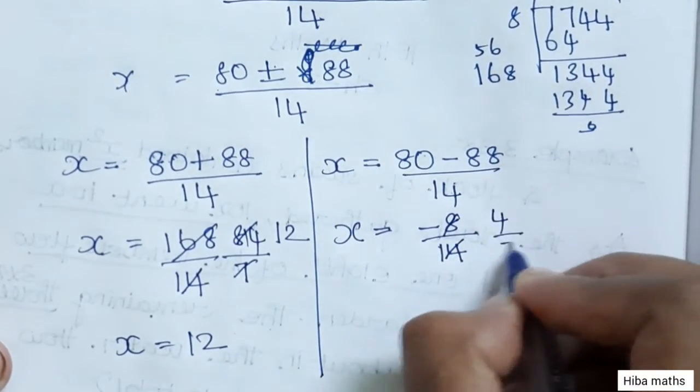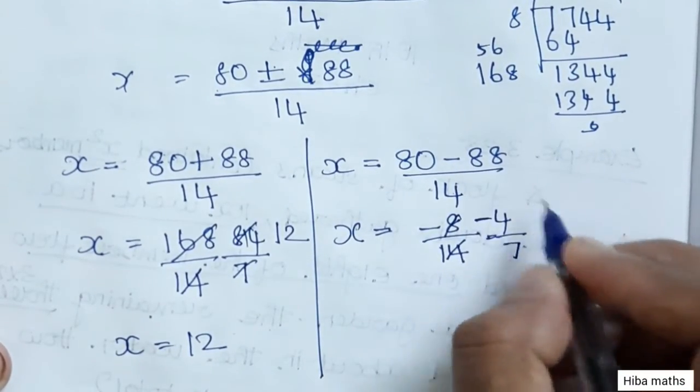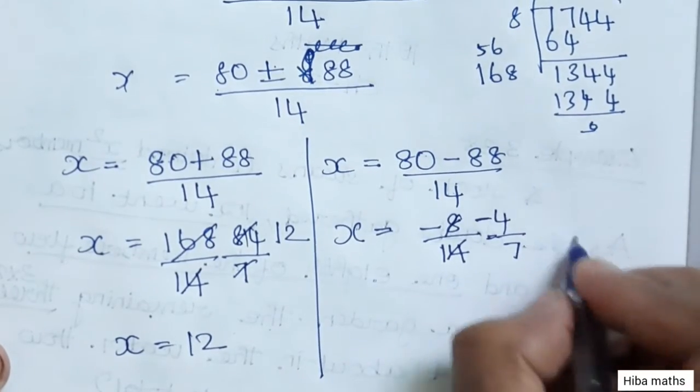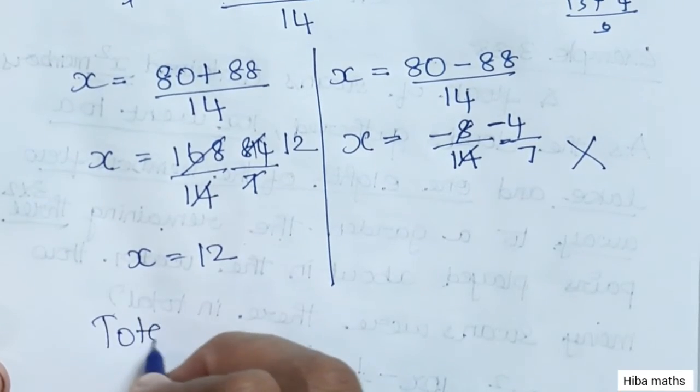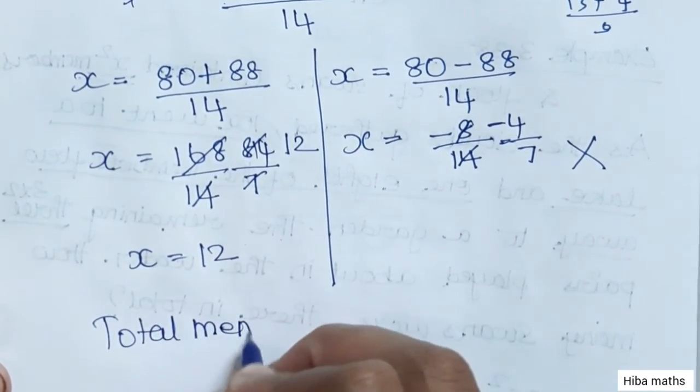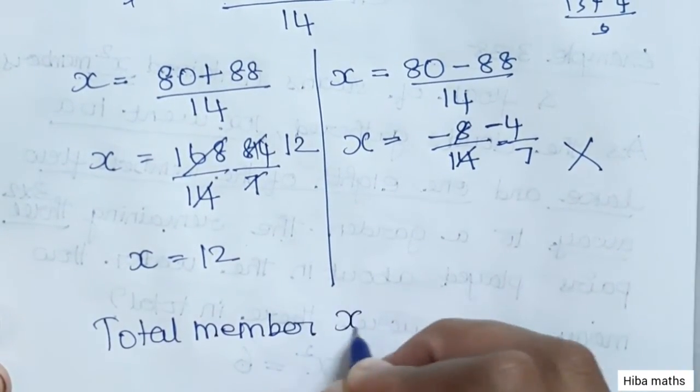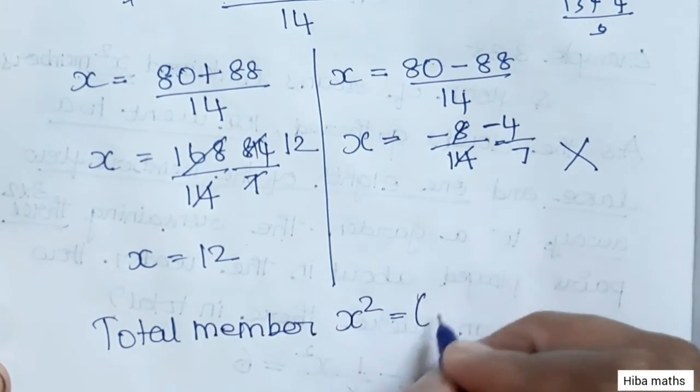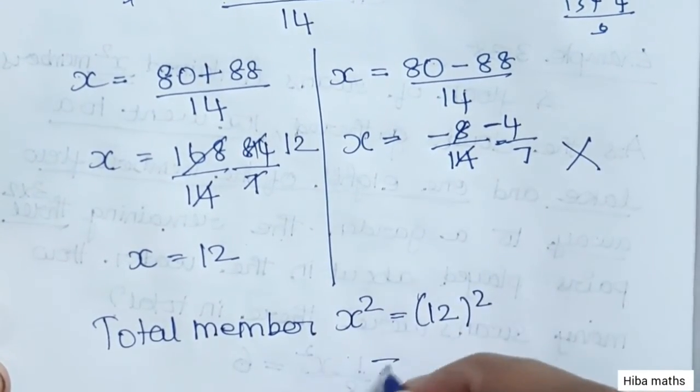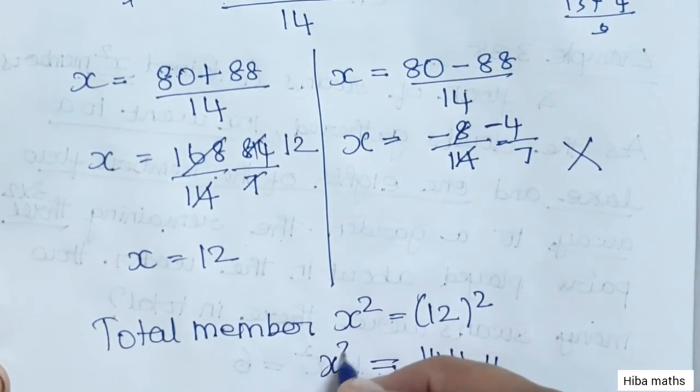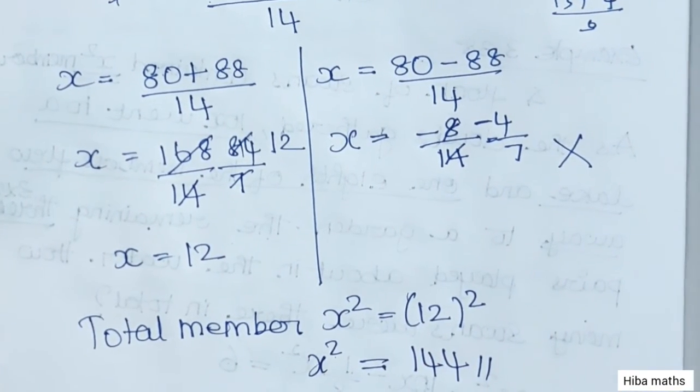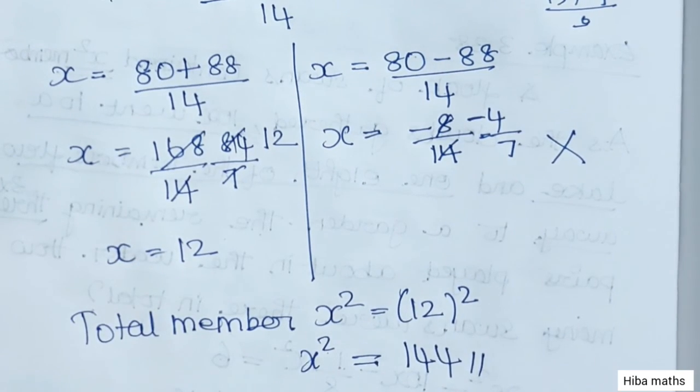Since the number of swans cannot be negative, we reject x = -4/7. Therefore x = 12. The total number of members is x², so 12² = 144. Thank you so much for watching.